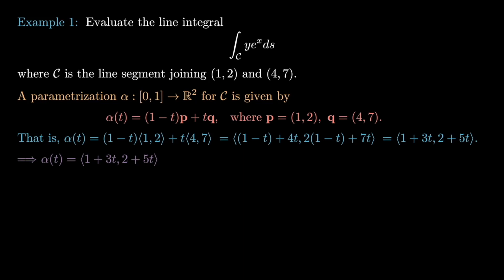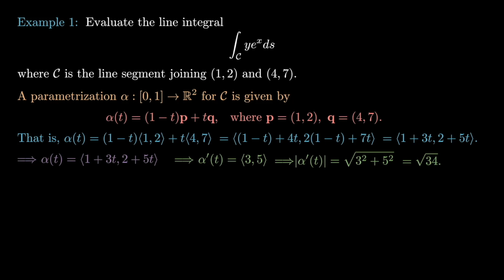With alpha(t) = ⟨1+3t, 2+5t⟩, we compute its time derivative by differentiating each component, giving alpha'(t) = ⟨3,5⟩. We then need the norm of this tangent vector, which by Pythagoras is the square root of the sum of squares: ||alpha'(t)|| = √(3²+5²) = √34.